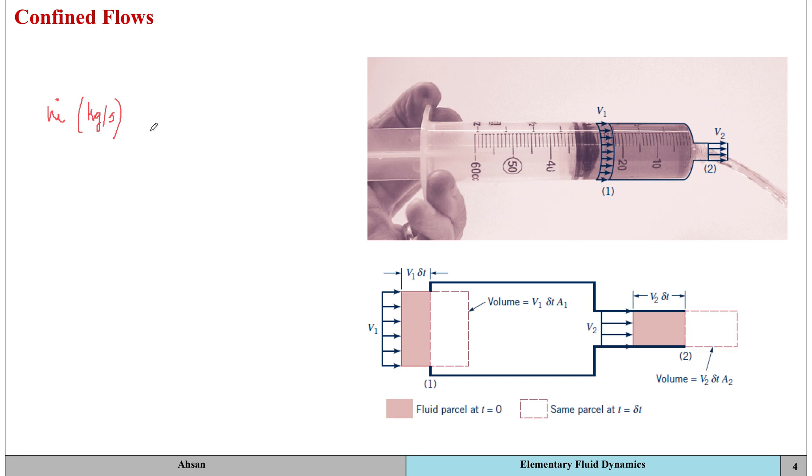Then m dot can be given in terms of the density of the fluid, which is rho, multiplied by q, where q represents the volume flow rate. The units for q are going to be meter cubed per second.